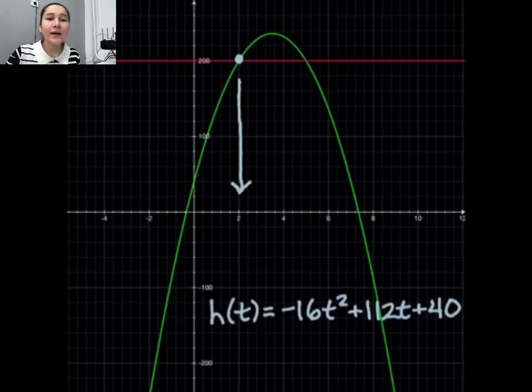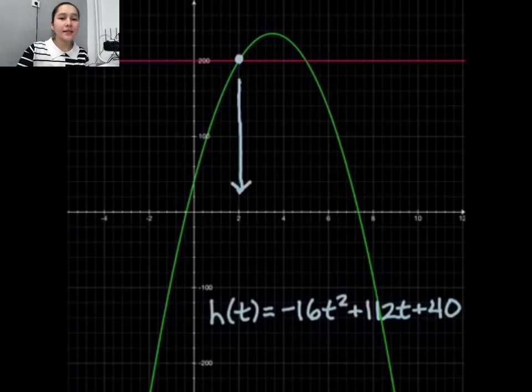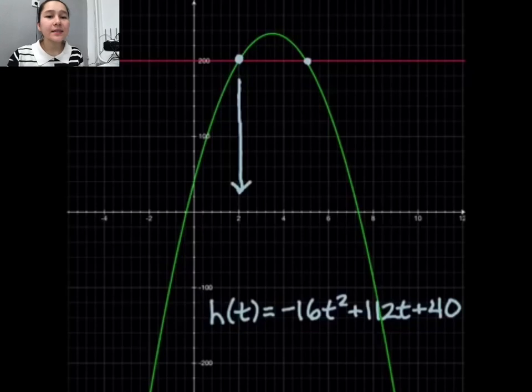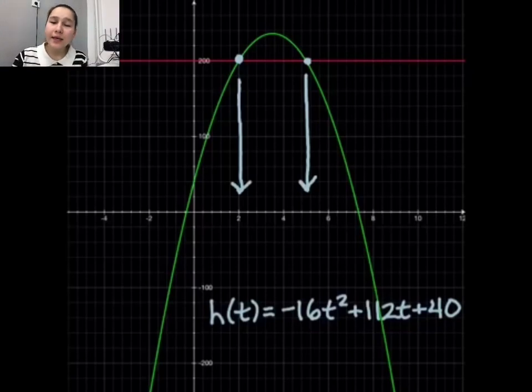So when x is 2, or in this instance t, the ball goes up to its height, comes back down, gets to 200 again. And if we go ahead and look at this down on our x-axis, you notice that that's also at x equals 5, or here t equals 5. So those are the two times that we get that value. So that's how parabolas work and how you can solve applications with them. And that's all guys, goodbye.